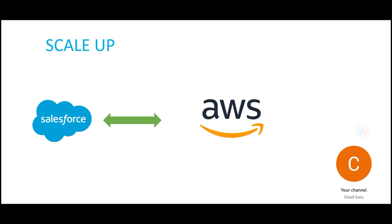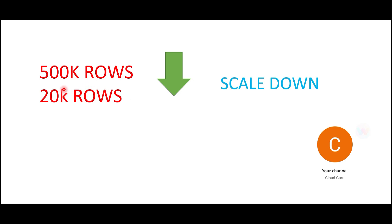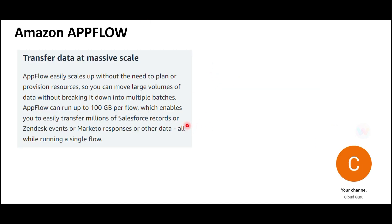Can AppFlow scale? Today you have 50,000 rows to move and in four hours you have 500,000 rows - will it work? Yes, it scales up. In AWS, scaling is built in by default. And it also scales down - if you go from 500,000 rows down to 20,000 rows it will scale down, so you don't pay for resources you're not using. AppFlow has massive scaling capabilities.